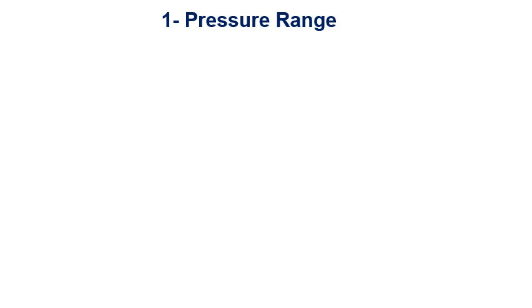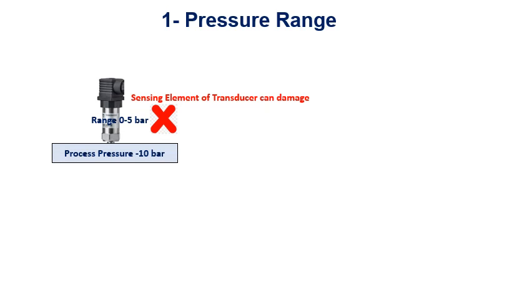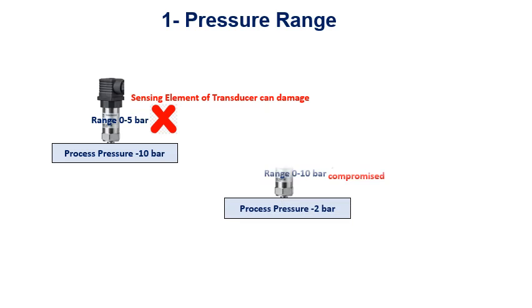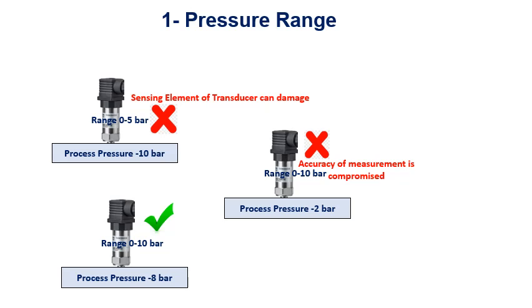The first and most important parameter to be considered while selecting a pressure transmitter is pressure range. The range should be selected very carefully. If the range is too small and the pressure to be measured is high, the sensing element can be damaged due to overloading. If the selected range is too large and the process pressure is too small, the accuracy of measurement is compromised. Make sure that the range must be more than the maximum operating pressure.